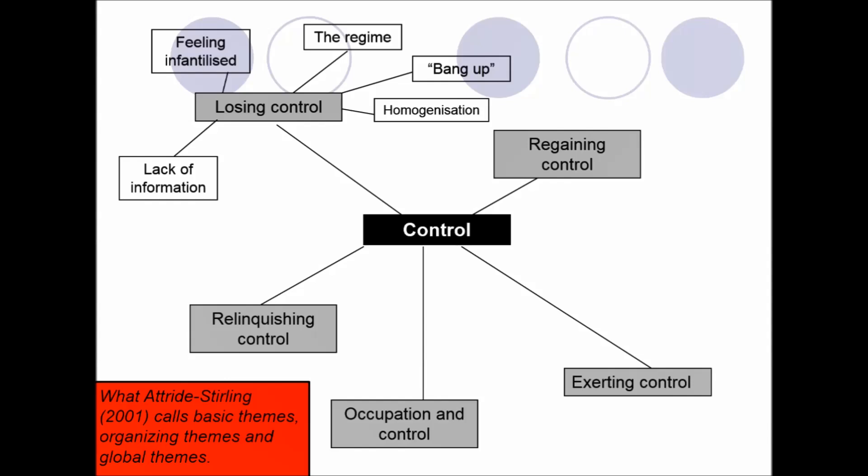You can take this a step further and think about global themes and how they also interlink and how they also interlink with organizing themes. So from my data you can see I had several organizing themes that interlinked to create one global theme which in this instance was called control.